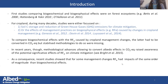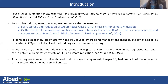First studies comparing biogeochemical and biogeophysical effects were on forest ecosystems. For croplands, during many decades, studies were either focused on the soil carbon storage and the reduction of greenhouse gas emissions for climate mitigation, or the effect of management practices and biogeophysical effects caused by changes in carbon management. To compare biogeochemical effects with the albedo radiative forcing caused by carbon management changes, the latter had to be converted in CO2 equivalent, but standardized methodologies to do so were missing.